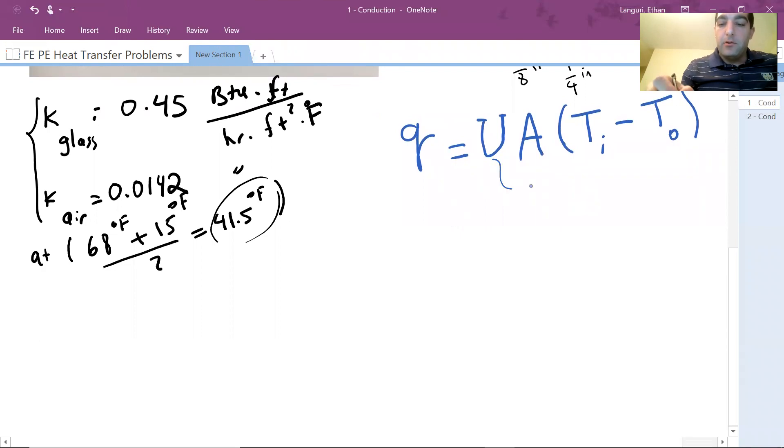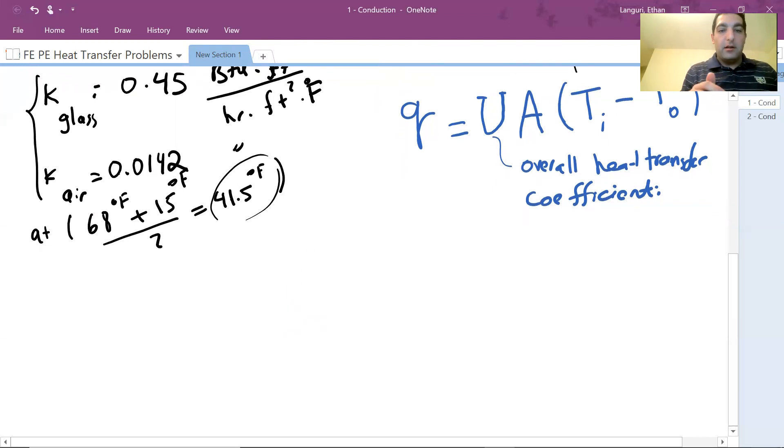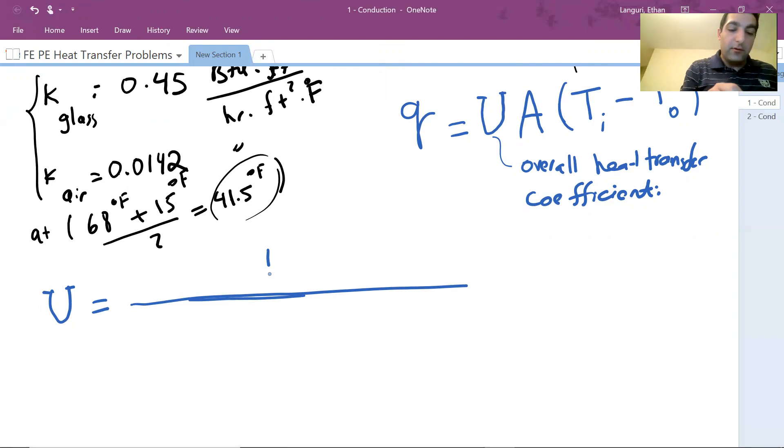So again, U is the overall heat transfer coefficient. And remember, U times A equals one over total resistance. So in this case, my areas are the same. So U is defined as the overall heat transfer coefficient. Let me start here. U is defined as one over—so U A is one over total resistance, so U is one over resistance without area, because area can be cancelled out.